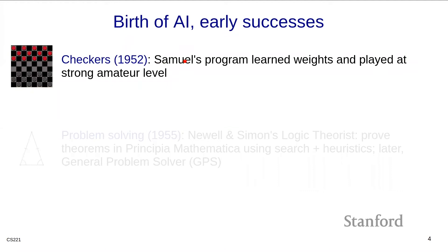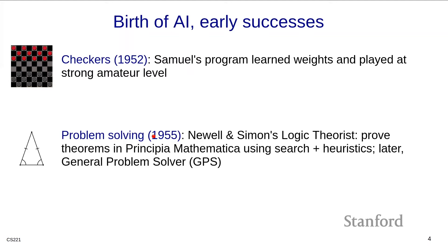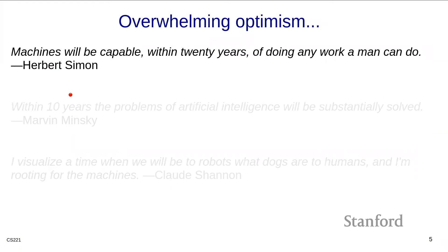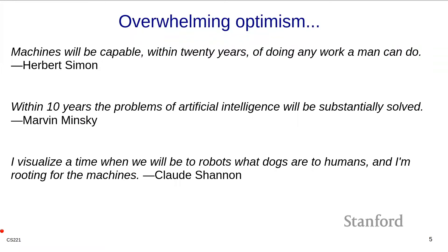During this time, a few systems were built. Arthur Samuel built a computer program that could play checkers at a reasonable amateur level and actually featured some machine learning. Alan Newell and Herbert Simon came up with the Logic Theorist that could prove theorems. For one theorem, they actually found a proof that was better than the human-written proof and tried to submit a paper on the result, but the paper got rejected because the reviewers said it was not a new theorem — they didn't realize the third author was actually a computer program. Later, they generalized these ideas to the General Problem Solver, aimed at solving any problem provided it could be suitably encoded in logic, carrying forward the ambitious general intelligence agenda. This was a time of high optimism, with leaders of the field predicting AI would be solved in a matter of years.